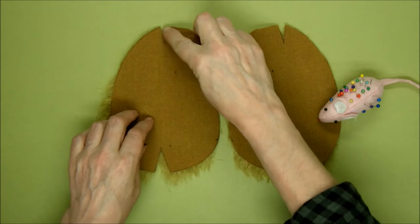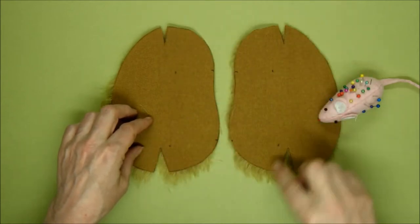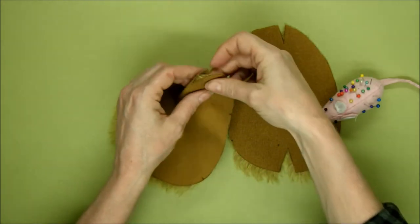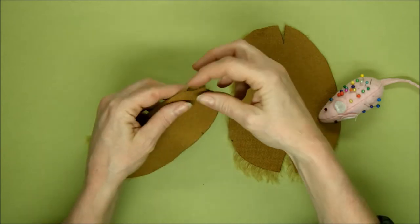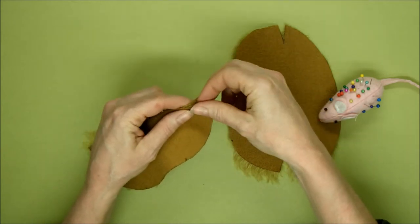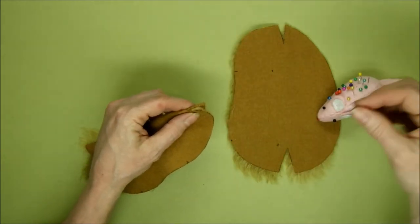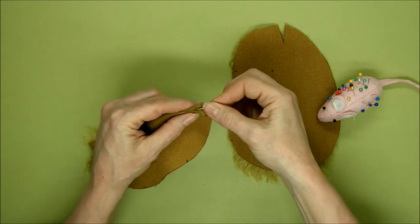First of all we need to deal with the darts at the top and the bottom that will shape our body pieces. You do that by folding the dart and tucking the pile in so that the wrong side is on the outside, right side is on the inside.